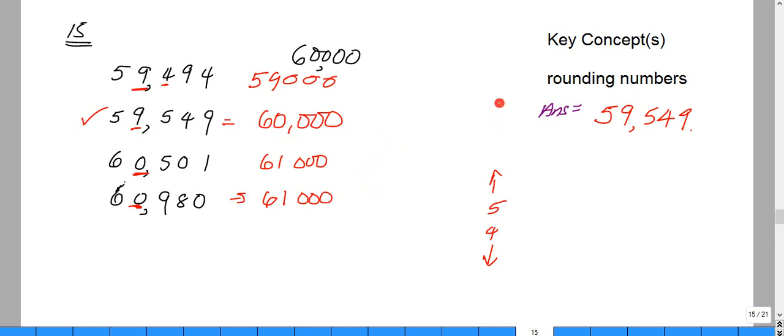We have to bear in mind our key concept of rounding. We need to know that we have our rounding up group and our rounding down group. Five and above we round up, and four and less we round down.